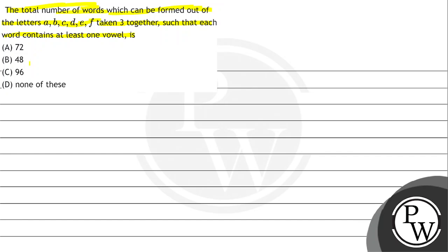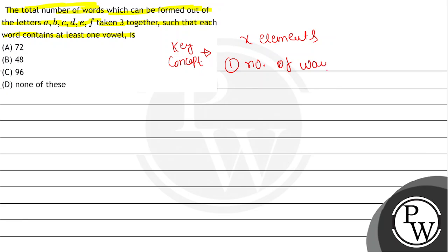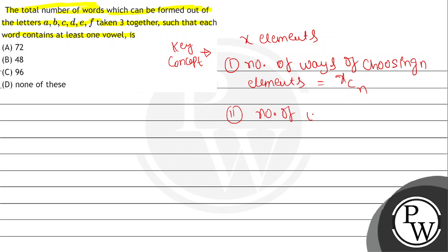The key concepts here are: first, if we have x elements, the number of ways of choosing n elements is xCn. Second, the number of ways of arranging n different elements is n factorial. From these two we can derive the total number of ways of arranging x elements taken n at a time.